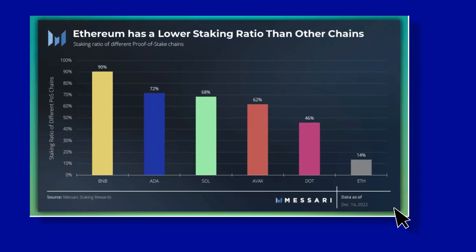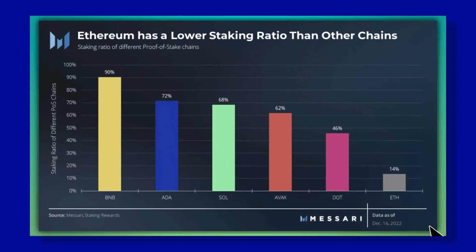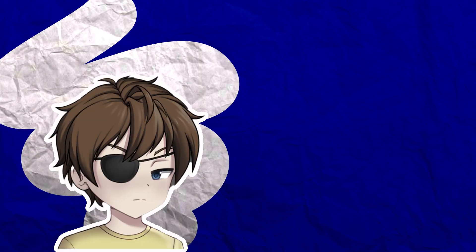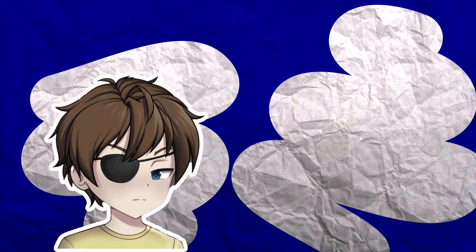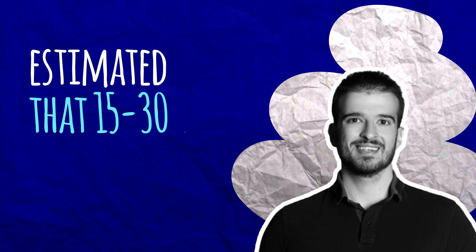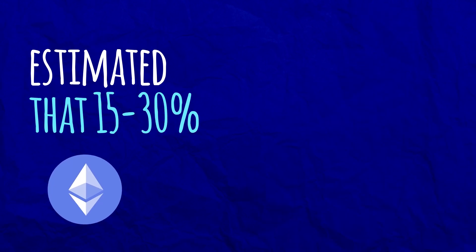The following Masari chart comparing the share of staked ETH to other blockchains has been making the rounds on Twitter. Ethereum's staking ratio is lower because A, there is more economic utility to ETH, and B, you can't unstake it. But the latter is about to change. Blockchain researcher Hasu and Paradigm CTO estimated that 15% to 30% of ETH may be staked without liquid staking, but with liquid staking, this number may surge to 80% or more.